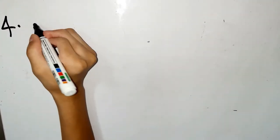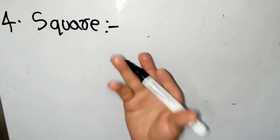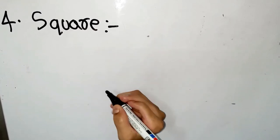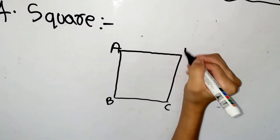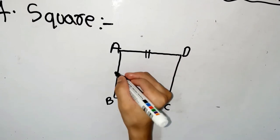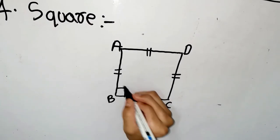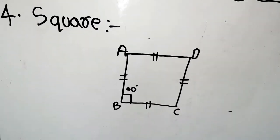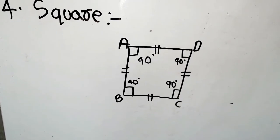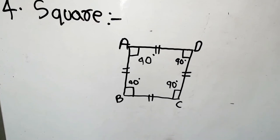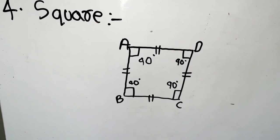A square is a shape that has four equal sides and all angles are 90 degrees. Here all the angles are 90 degrees. The basic difference between square and rectangle is that a square has four equal sides, but a rectangle has opposite equal sides.